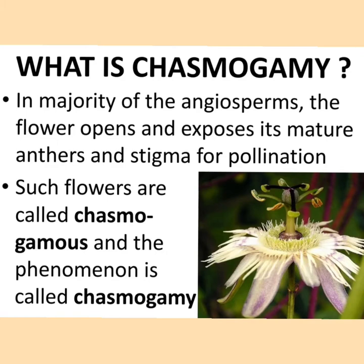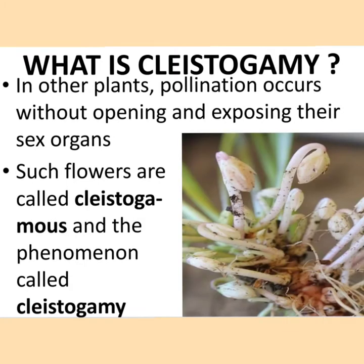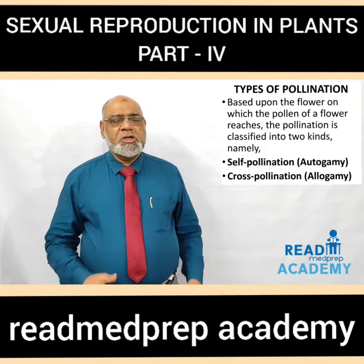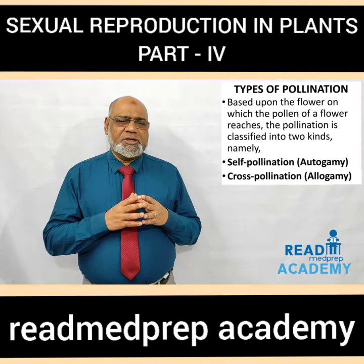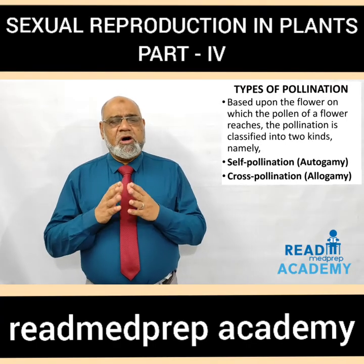What is chasmogamy? In the majority of angiosperms, the flower opens and exposes its mature anthers and stigma for pollination. Such flowers are called chasmogamous flowers and the phenomenon is called chasmogamy. What is cleistogamy? In other plants, pollination occurs without opening and exposing the sex organs. Such flowers are called cleistogamous flowers and the phenomenon is called cleistogamy.